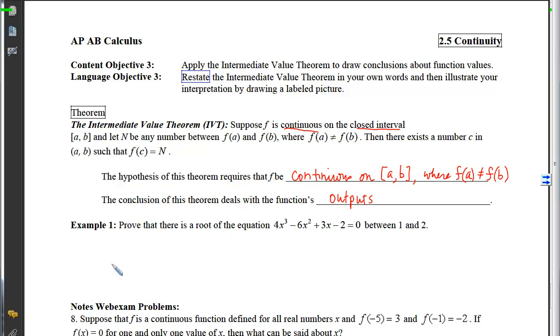To see that in play, let's look at Example 1. Example 1 says prove there is a root of the equation 4x³ - 6x² + 3x - 2 = 0 somewhere between 1 and 2. So buried in this problem is an application of the Intermediate Value Theorem.